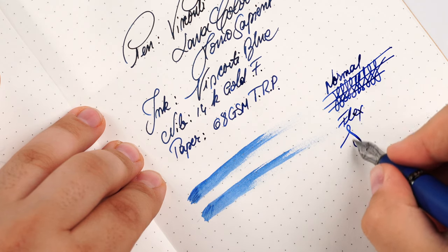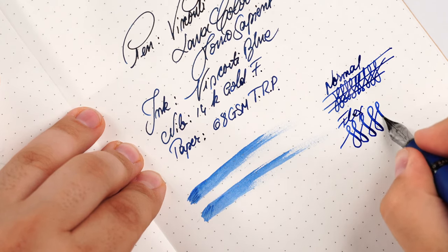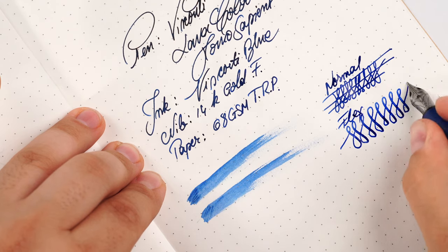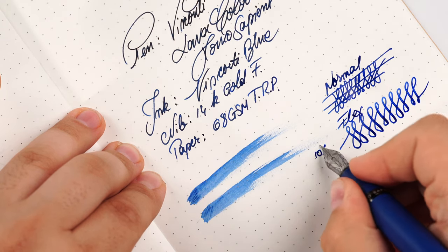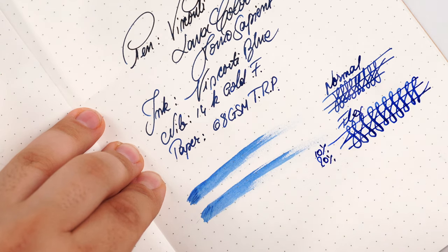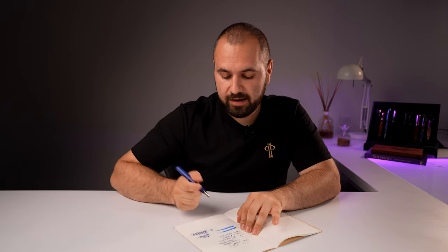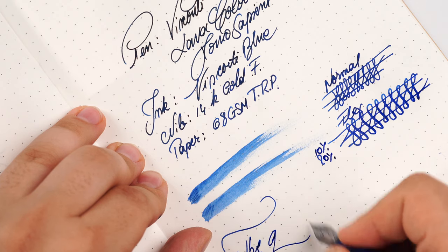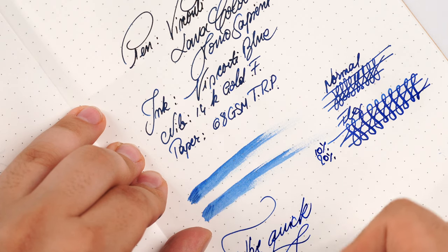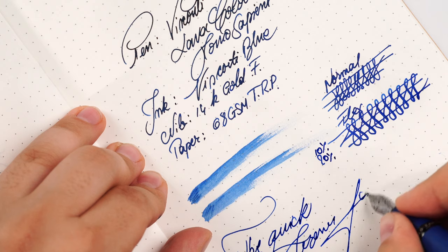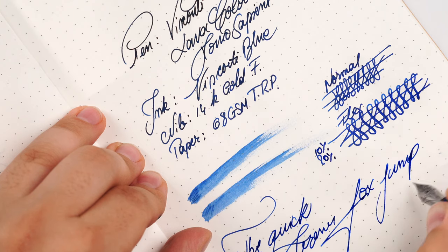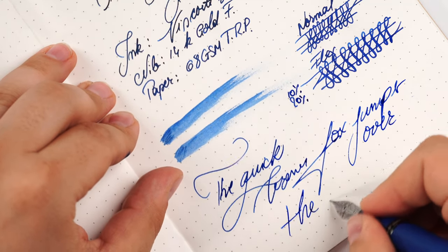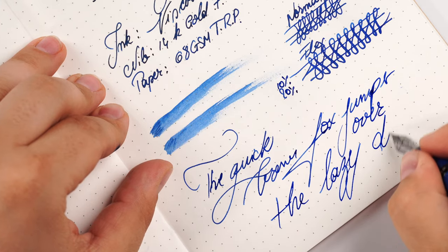Flex, and let's push this nib a little bit. As you can see, it offers a little bit of line variation. It's maybe 10 to 20% more flexy and soft than the 18-carat gold nib. Now, the most important sentence in any pen reviewer existence. The quick brown fox jumps over the lazy dog.